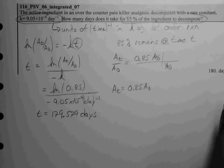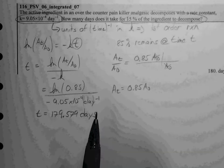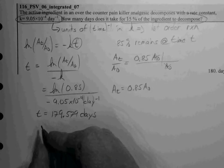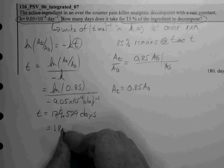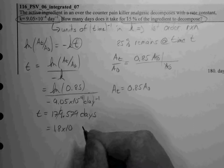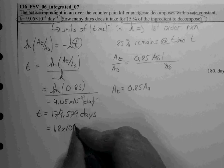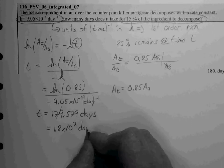We'll look and see that we can really only justify two sig figs here. So our time is 1.8 times 10 to the second days.